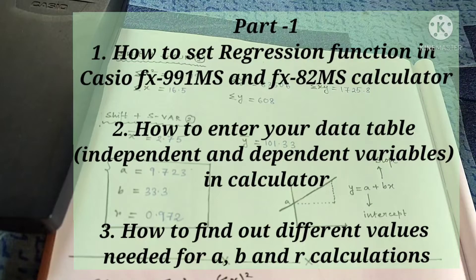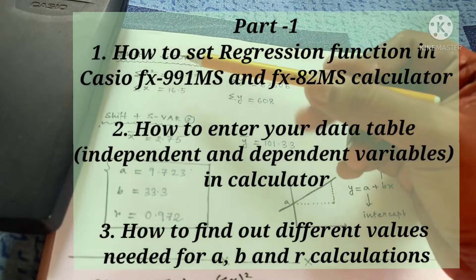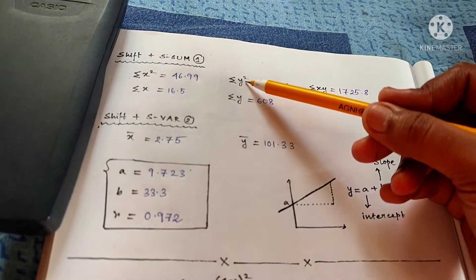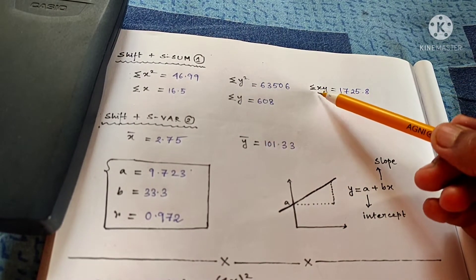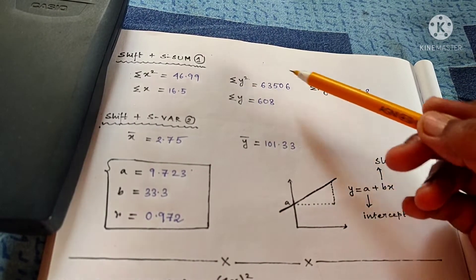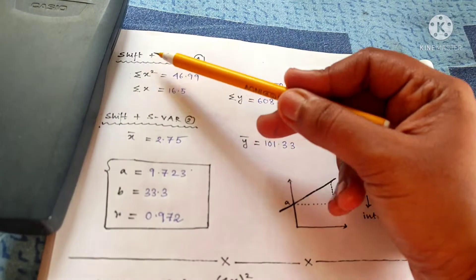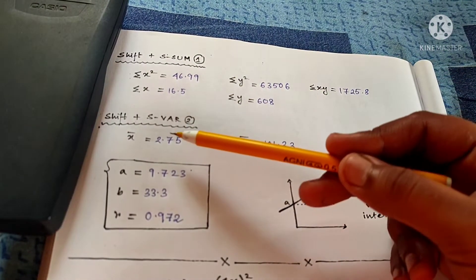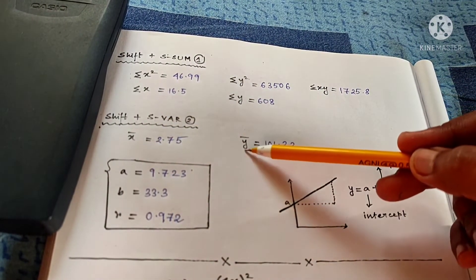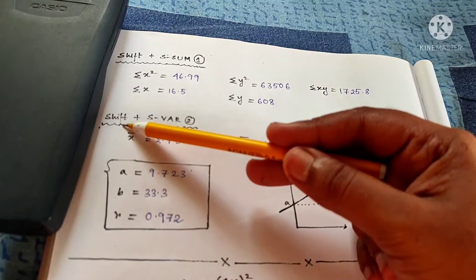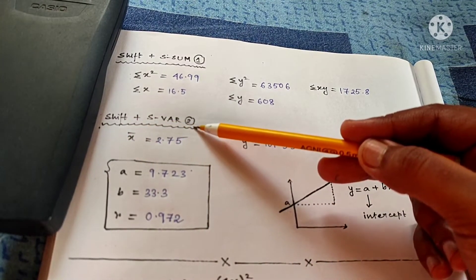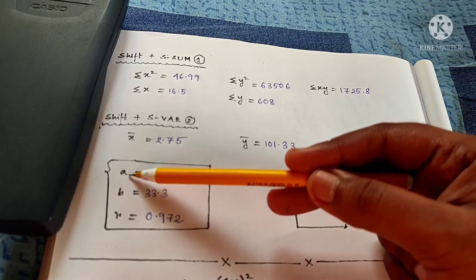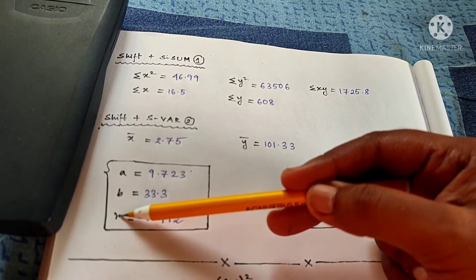In Part 1, I covered how to register your data table — the X variables and Y variables in your calculator — and from there how to calculate values like summation of X square, summation of X, summation of Y square, summation of Y, summation of XY using the function Shift plus S-Sum or 1, and the value of summation of X and summation of Y using the function Shift plus S-Var 2. I also told how to find out the values of A, B and R.